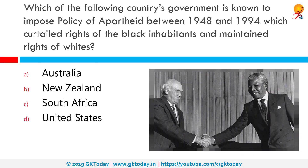Which of the following countries' government is known to impose the policy of apartheid between 1948 and 1994, curtailing rights of the black inhabitants and maintaining rights of whites? The correct answer is South Africa. Apartheid was a system of institutionalized racial segregation that existed in South Africa and Southwest Africa from 1948 until the early 1990s. Nelson Mandela and FW de Klerk led efforts to negotiate an end to apartheid, resulting in the 1994 multiracial general elections.